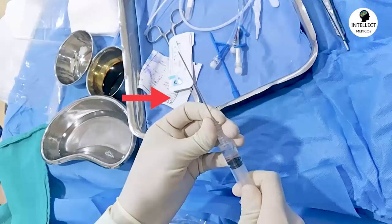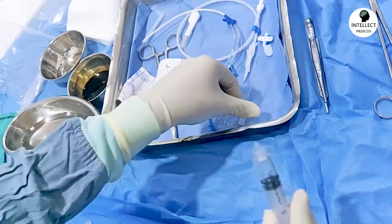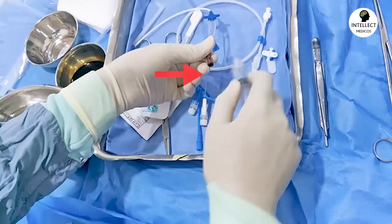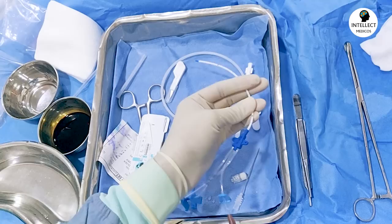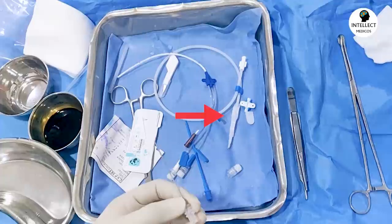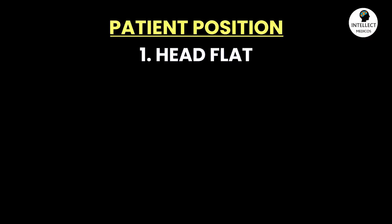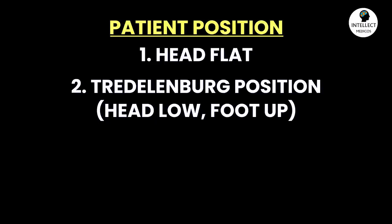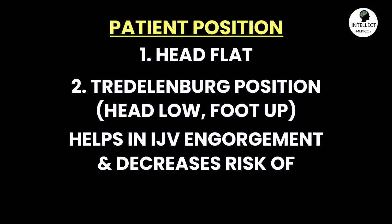This is the needle provided in the central line kit — de-air it first. This is a triple lumen catheter and the brown port is the distal port. De-air all the ports before insertion. The tissue dilator and guide wire are also in the kit. Before introducing the needle, position your patient with the head flat or in Trendelenburg position — head low and foot up — which aids venous engorgement and reduces the risk of air embolism.